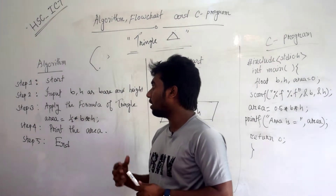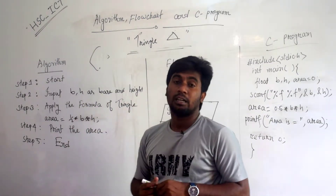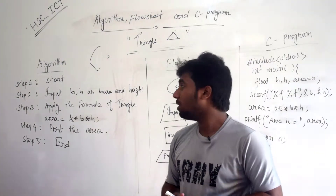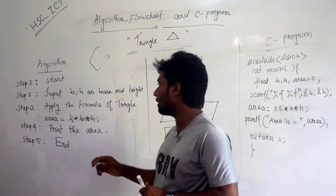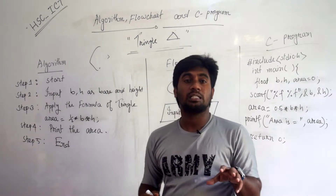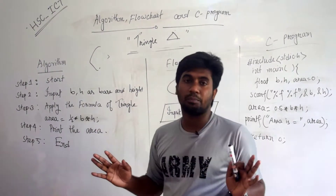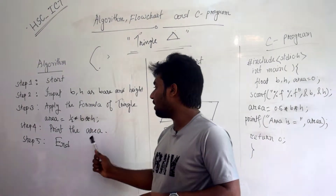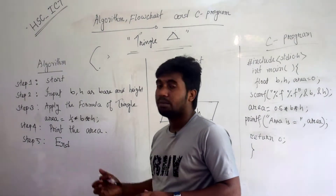The algorithm is the idea of base and height. If you want to change the base and the height, you can adjust them. Apply the formula of triangle area, which uses the base and the height. We need to change the base and height, print the area, and change the program.